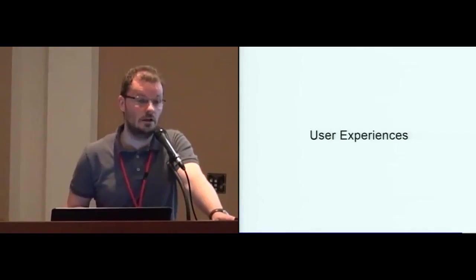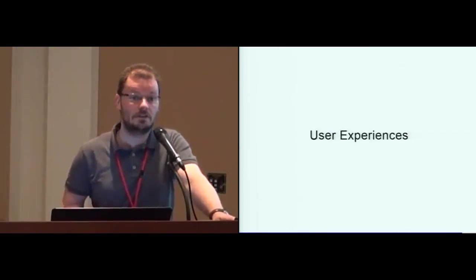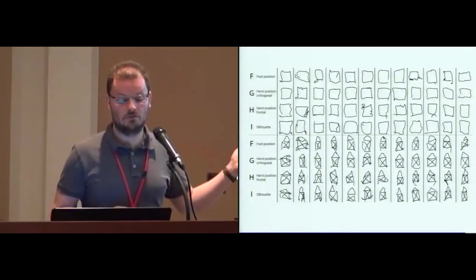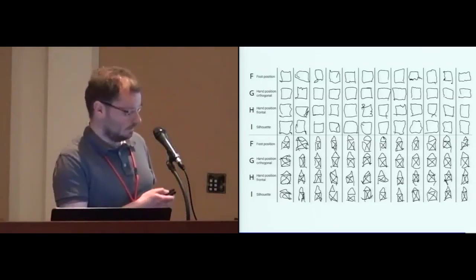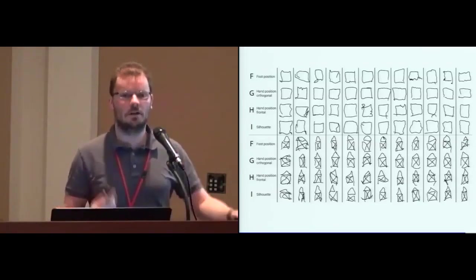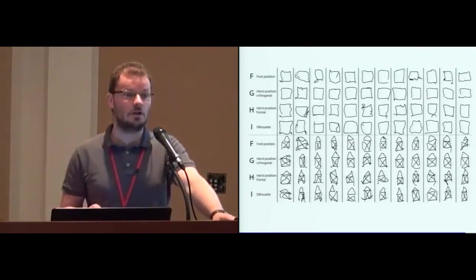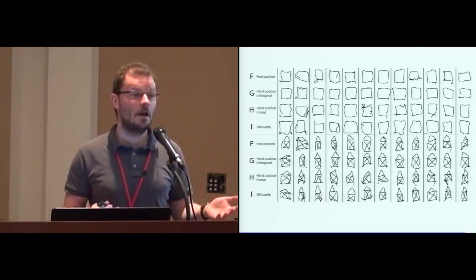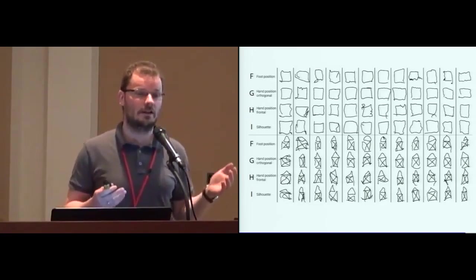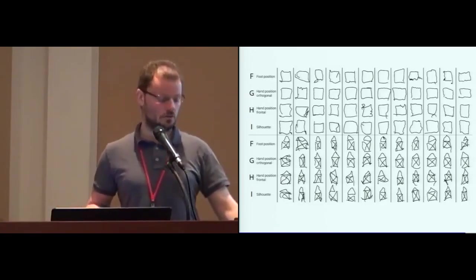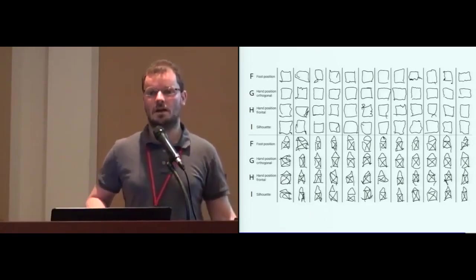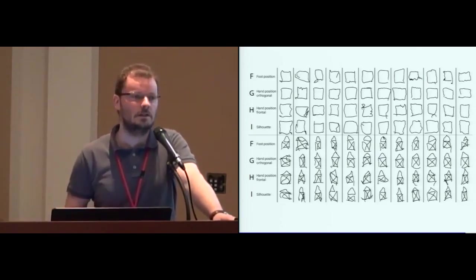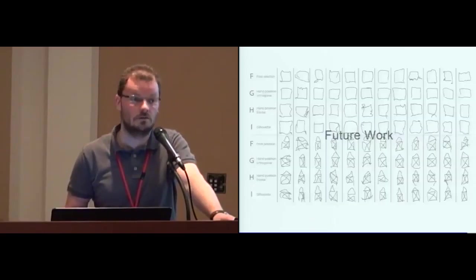We conducted a very small user study to look at user experiences with these different techniques. We compared foot position, hand position with orthogonal mapping, hand position with frontal mapping, and silhouette. Subjectively, it looks like hand position orthogonal leads to a little bit more accurate shapes. We also found that users found it much more intuitive and quickly understood the interaction when we showed their silhouette. They had problems understanding the interaction when we used hand position because the hand was usually at resting position next to the body, and users had difficulty understanding they could use their hand to interact. After interacting for some time, however, the silhouette got a little bit annoying and then users preferred to use only a cursor.